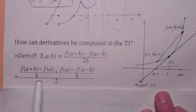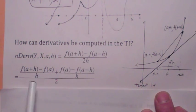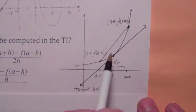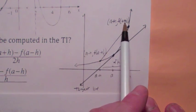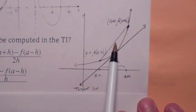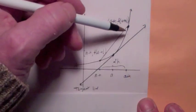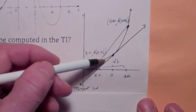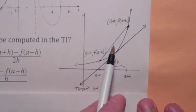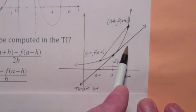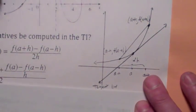Look at the picture here. The slope of this line is [f(a+h) - f(a-h)] / 2h, and that equals the average of the slope of the secant line from a to a+h and from a-h to a. The reason why that's a good idea is because the slope of that line is a lot better estimate of the slope of the tangent line. There's a problem with this, though — in some cases, your calculator will give you an error.